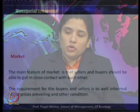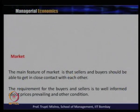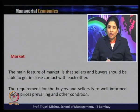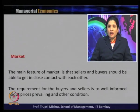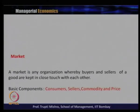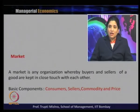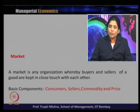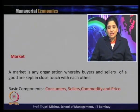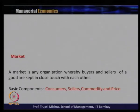The main feature of market is that sellers and buyers should be able to get in close contact with each other. The requirement for buyers or sellers is to be well informed about prices prevailing and other conditions. To sum up, market is any organization whereby buyers and sellers of a good are kept in close touch with each other. There are four basic components of a market: consumers, sellers, commodity, and price.